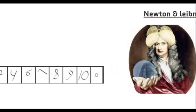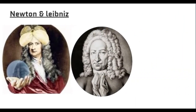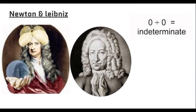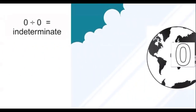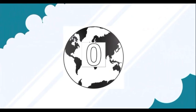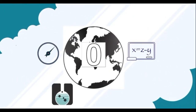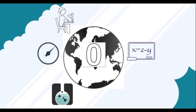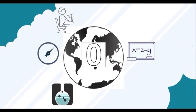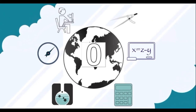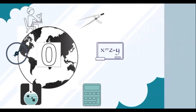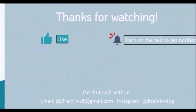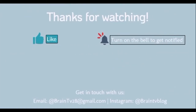In the 1600s, Leibniz and Newton solved the problem of dividing any number by zero. It is quite fascinating to think that nothing has made everything. Without zero, we wouldn't have physics, chemistry, economics, computers, and so much more.